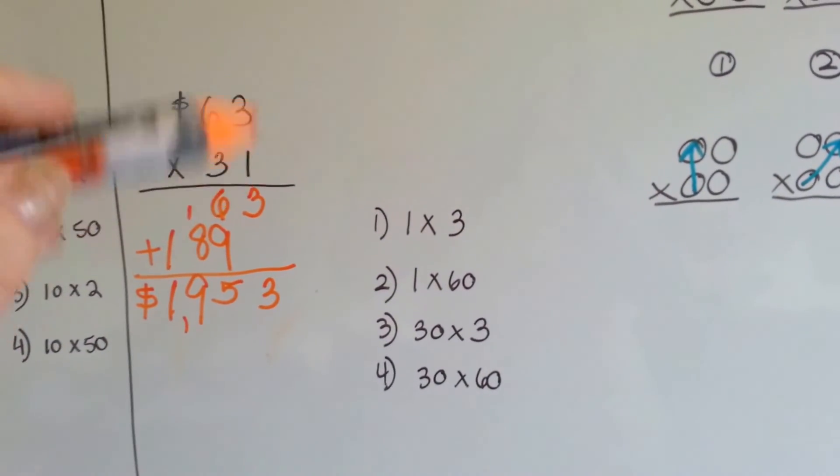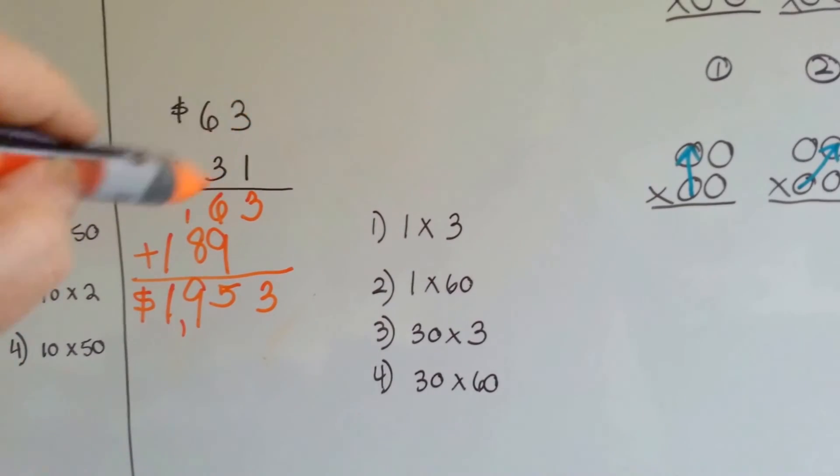So, the first thing we do is multiply the ones, then the ones by the tens, then the tens by the ones, and then the tens by the tens. I know this seems confusing, but this is the difference between the two methods.